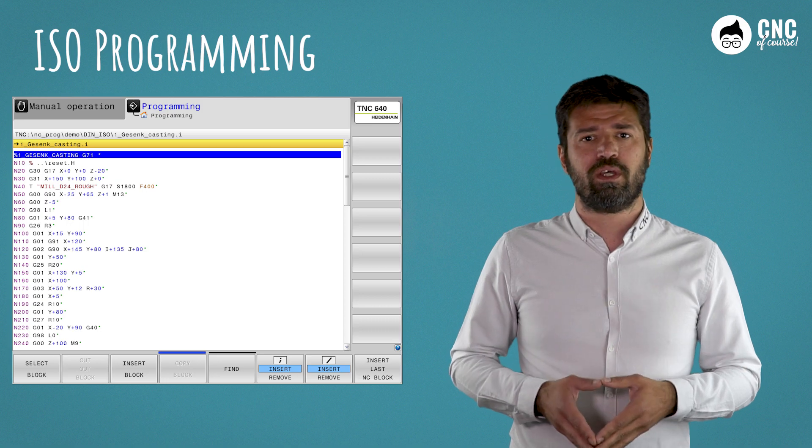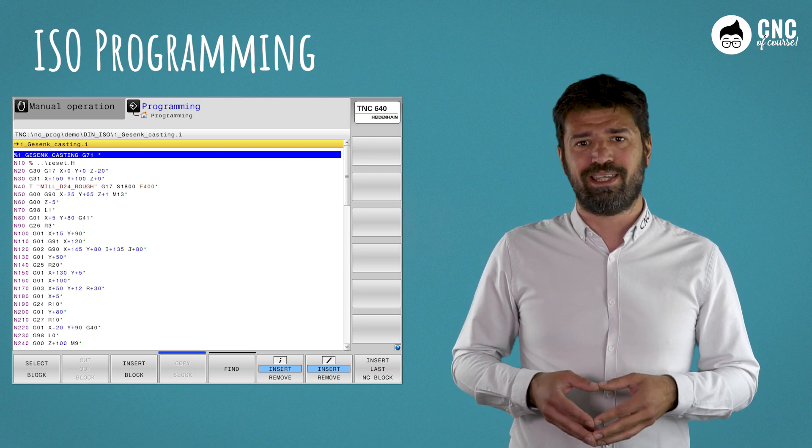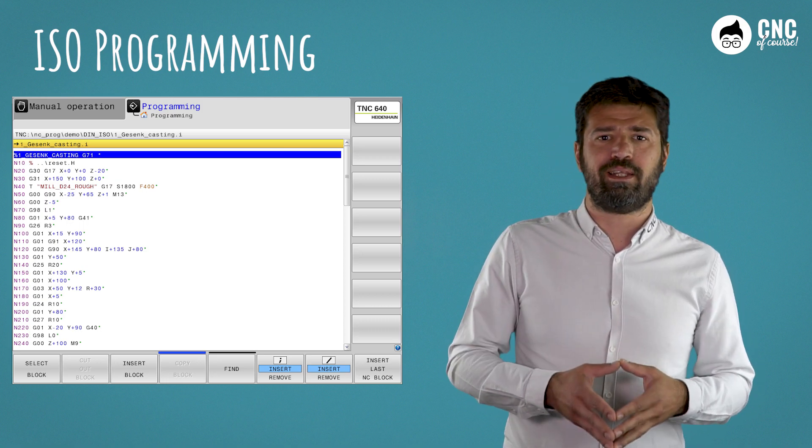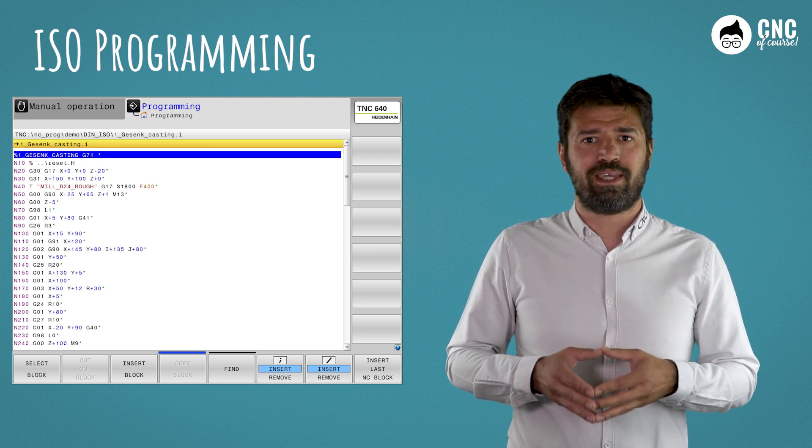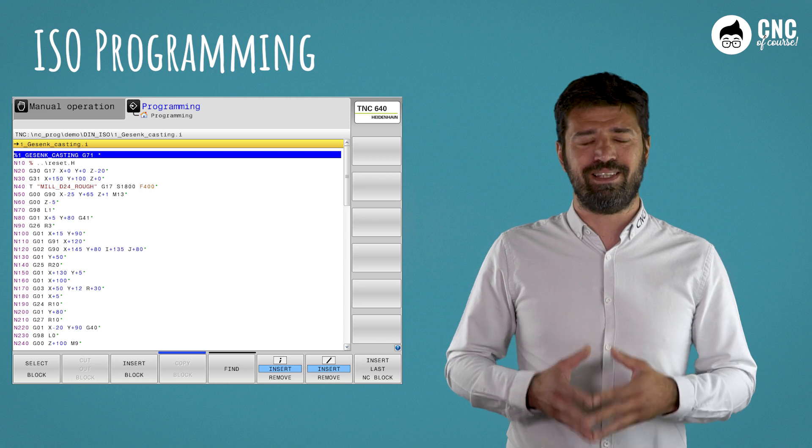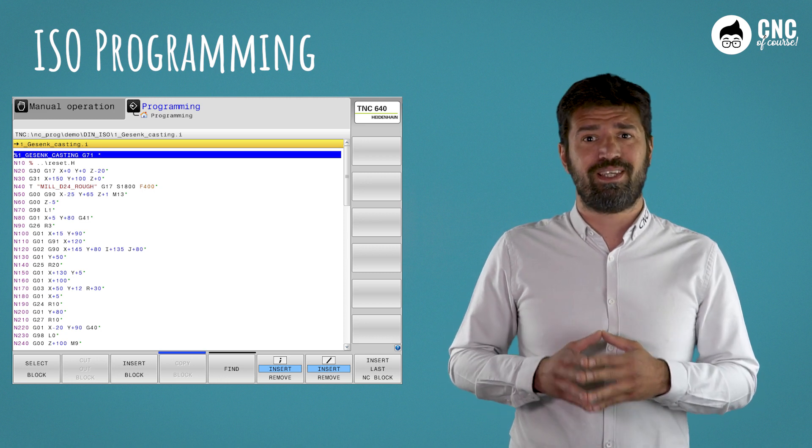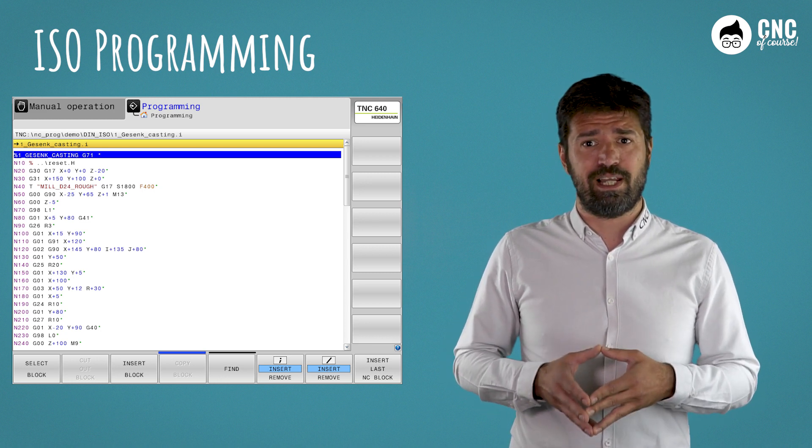Another possibility is to use the ISO language, which is a language common to many non-Heidenhain machines, consisting of letters, numbers, and codes. There are no questions or help, but it requires the operator to know the correct syntax. But beware, ISO was born as a universal language, but over time each builder has added its own commands.